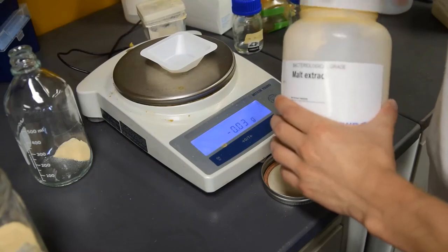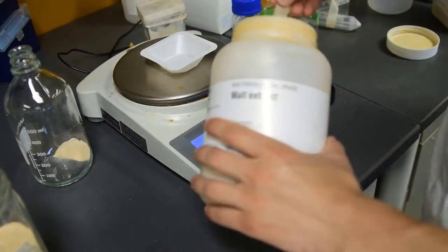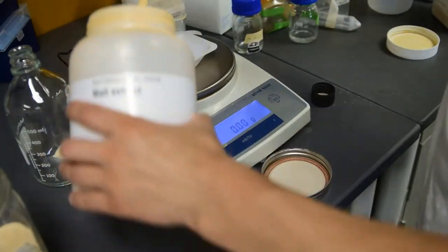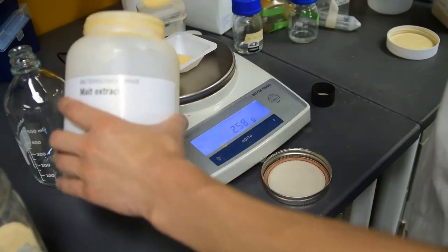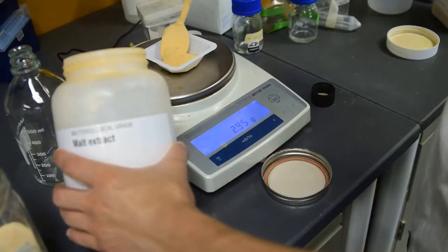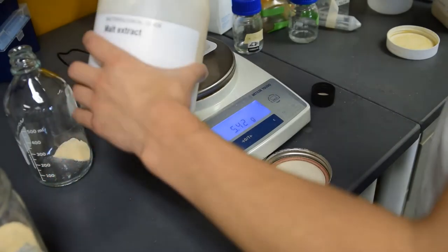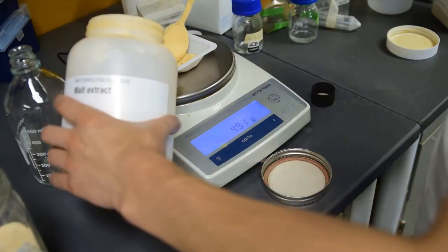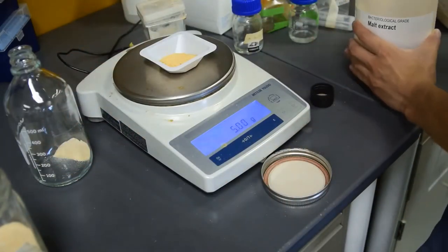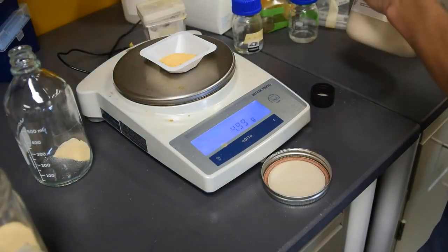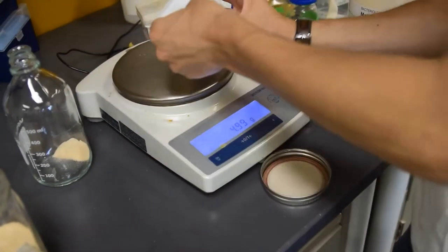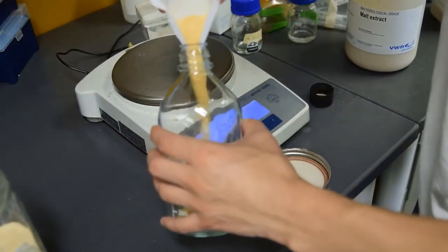Next we're going to do malt extract. Tare the scale again with the new weighing dish. Fill it up. Malt extract can be somewhat sticky, so make sure to wash your hands afterwards. Again, pour it into the container and throw your weighing dish away.